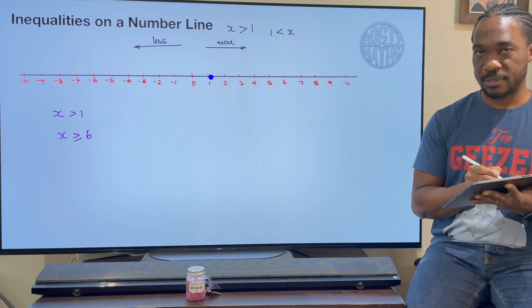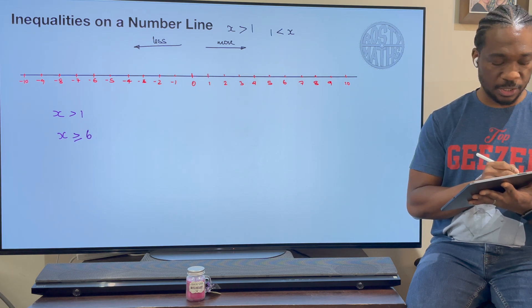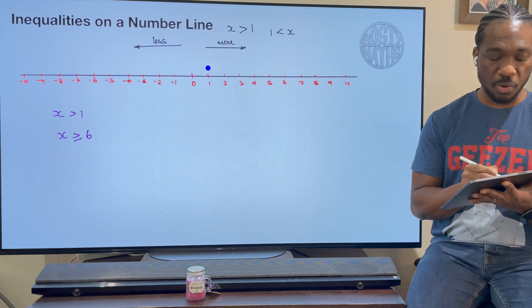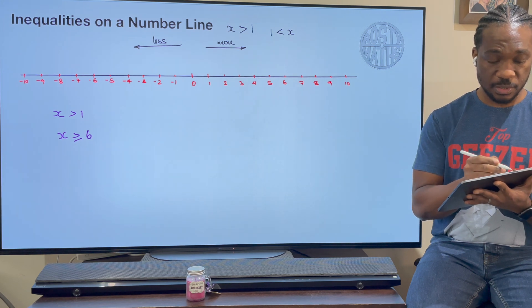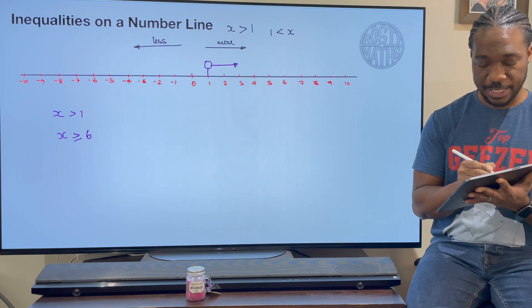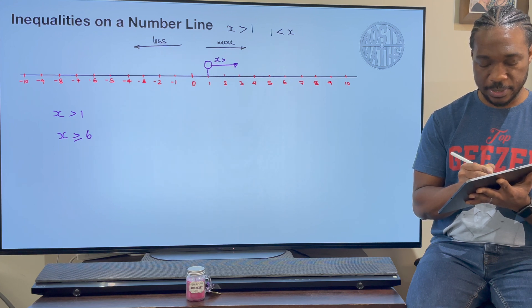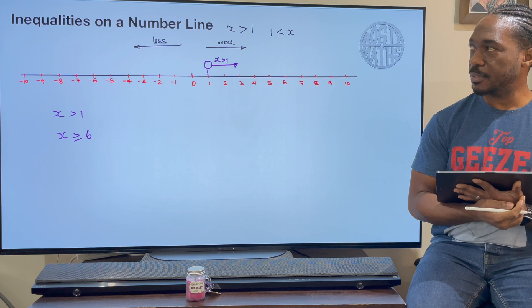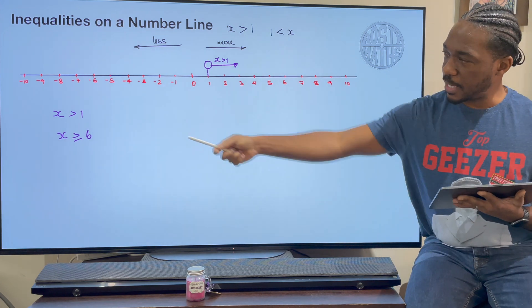How do we represent that on a number line? Well, we find where 1 is. One is there, and if I want to get greater or go for more, I need to go that way. So I will represent it like this, and you put an open circle and an arrow going that way. And this is x is greater than 1.